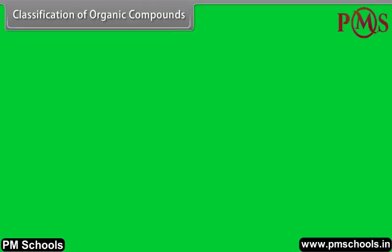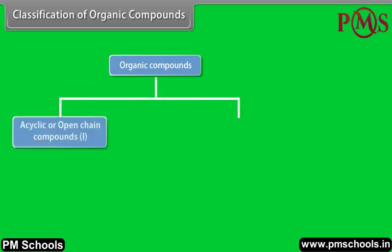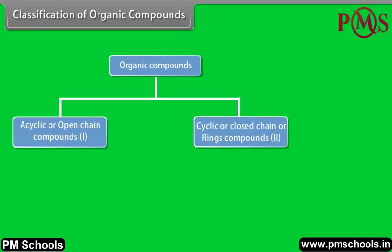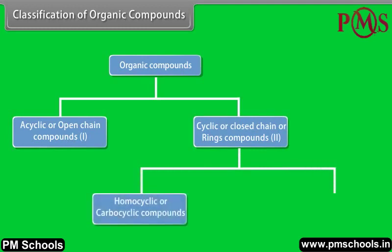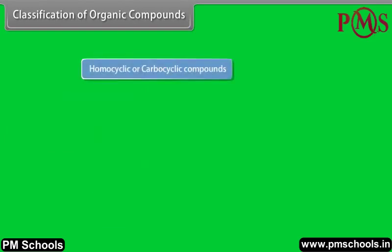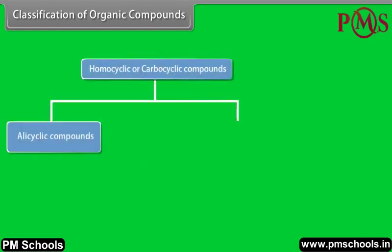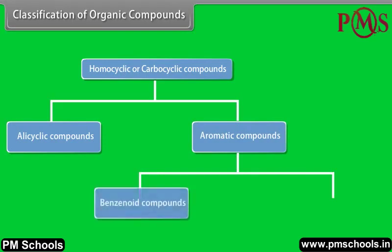Classification of organic compounds. Organic compounds can be grouped into acyclic or open-chain compounds, and cyclic or closed-chain or ring compounds. Cyclic compounds can be further divided into homocyclic or carbocyclic compounds, and heterocyclic compounds. Homocyclic can be further divided into alicyclic and aromatic compounds. Aromatic compounds can be further divided into benzenoid and non-benzenoid compounds.